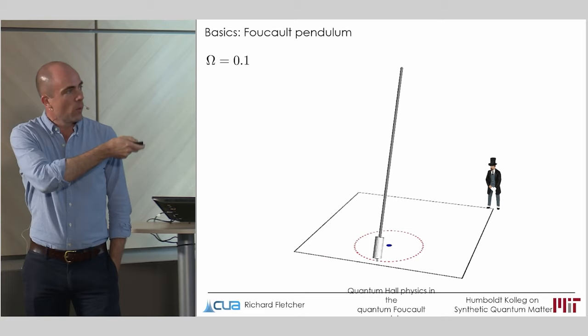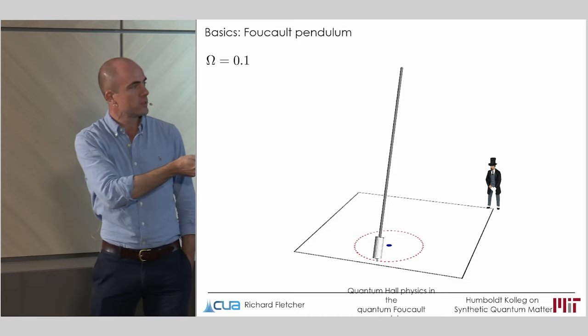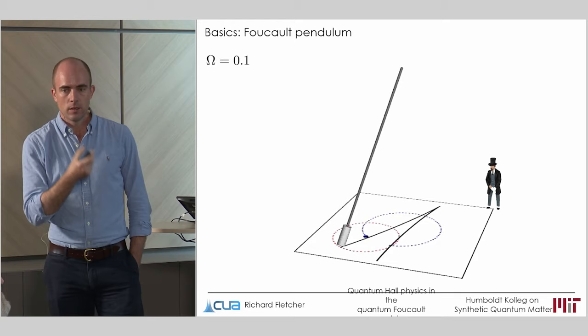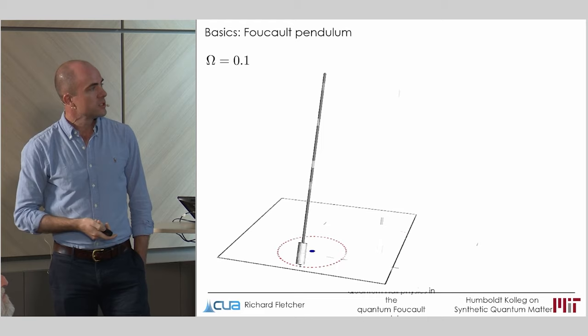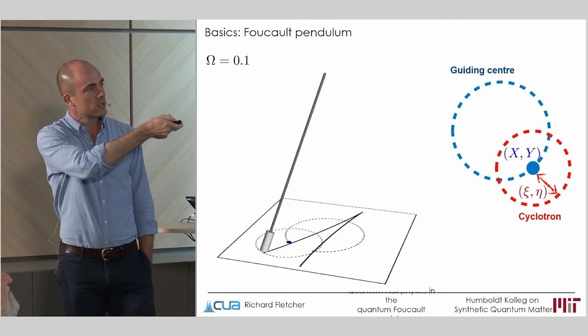And so if you want to figure out the motion of your pendulum, you just have to add together these two motions. And if you do that, you'll obtain epicycles, which in the limit of relatively slow rotation of the frame compared to the pendulum frequency, makes it appear as if the pendulum swings back and forth along an axis, which slowly precesses, revealing the rotation of the reference frame that you're in. This is a good moment to introduce some coordinates. These fast counter-rotating motions are known as cyclotron orbits with coordinates psi and eta. And these cyclotron orbits occur around the guiding center, which will give coordinates capital X and capital Y.